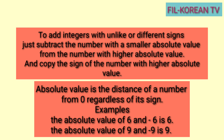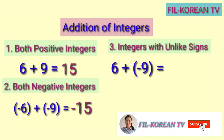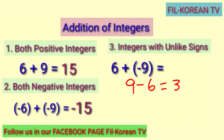Let's go back to the problem. The rule is we will subtract the number with a smaller absolute value from the number with higher absolute value. So, we will subtract 6 from 9. 9 minus 6 equals 3. Then, to put the sign in our answer, we need to copy the sign of the number with higher absolute value. Since negative 9 has a higher absolute value, we will copy its sign, and it is negative. Therefore, positive 6 plus negative 9 equals negative 3.